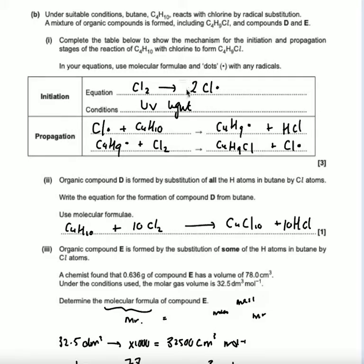Propagation is when we use the free radical that we have made, and we combine it with the substance that they've included in the question. So here it says, under suitable conditions, butane reacts with chlorine by radical substitution. So we have to have the chlorine here, and we're going to put the butane.